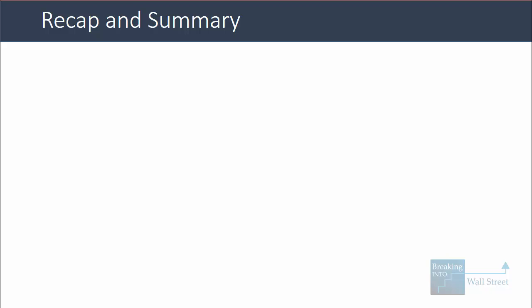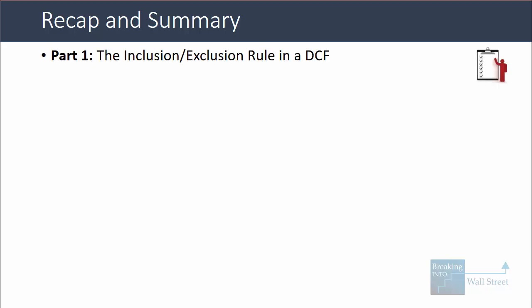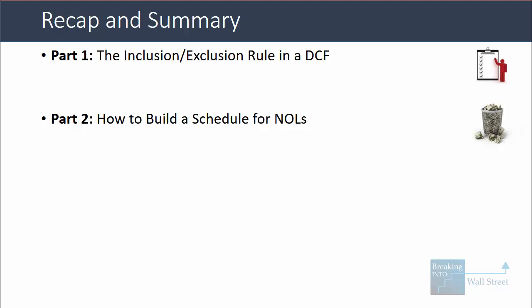We're at the end, so let's do a recap. In part one, we covered the inclusion-exclusion rule in a DCF: if you include an income or expense line item in free cash flow, exclude the corresponding asset or liability — and if you exclude an item, include the corresponding asset or liability. This applies to net interest expense, NOLs, rent, and almost anything you can think of. In part two, we showed how to build a schedule for NOLs, set up all the formulas, calculate book and cash taxes, and link to the proper taxes in NOPAT depending on which method you're using.